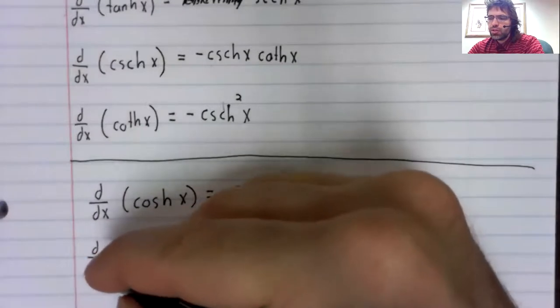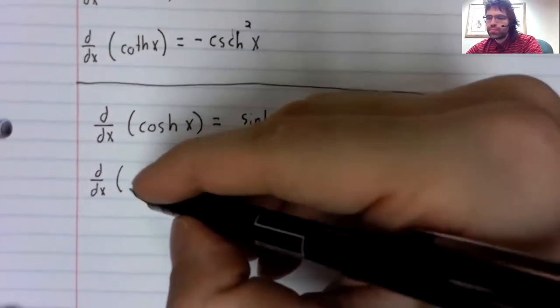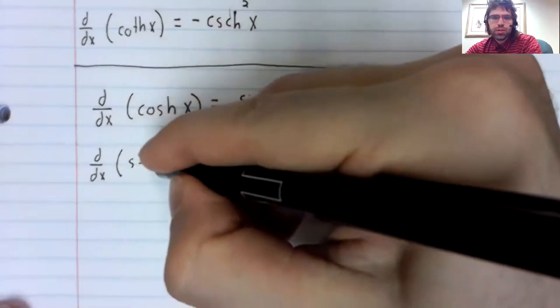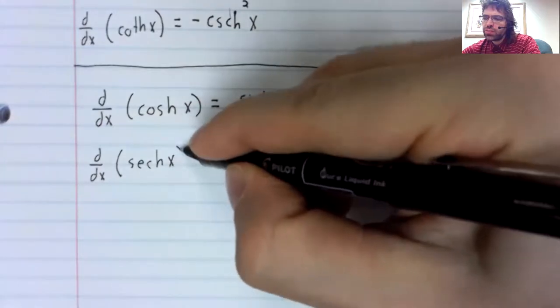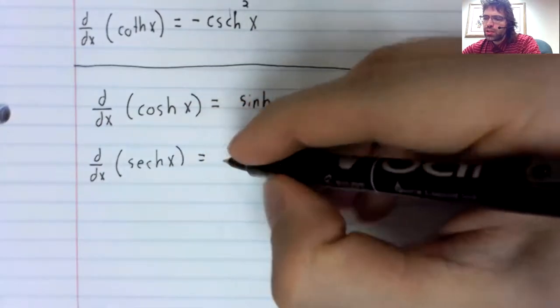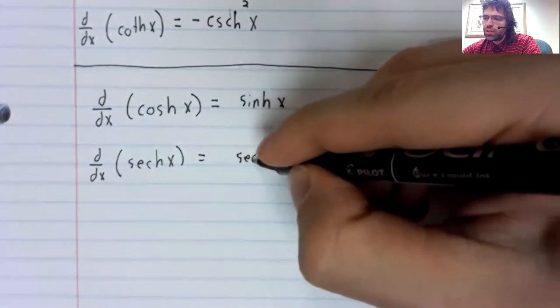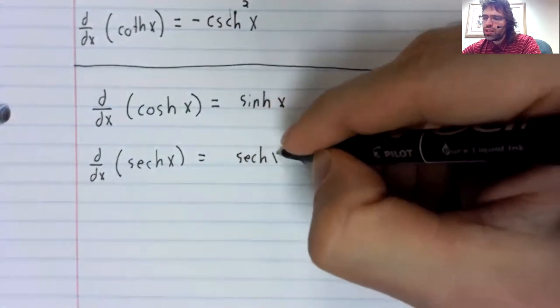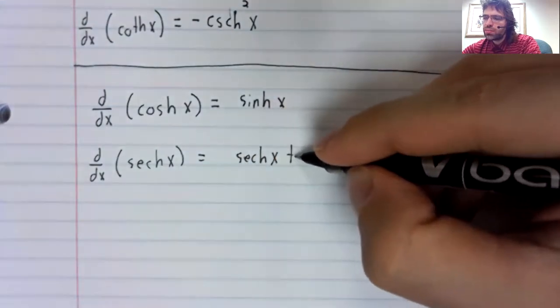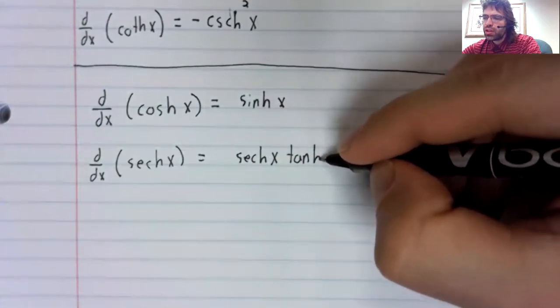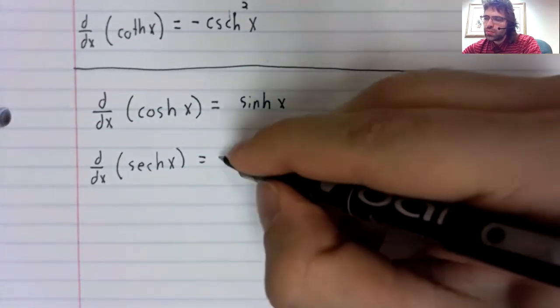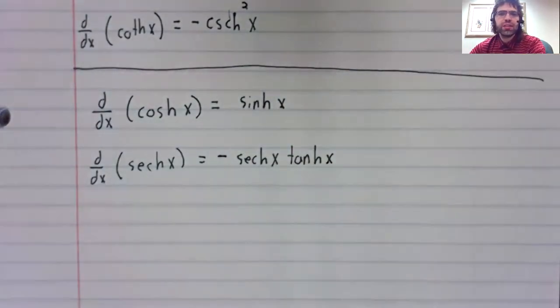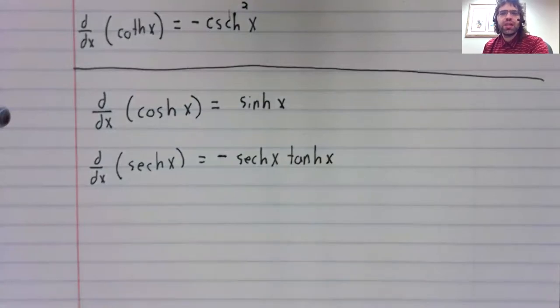The derivative of the hyperbolic secant is not the hyperbolic secant times the hyperbolic tangent. It comes close to being that, but it has a negative sign in the front.